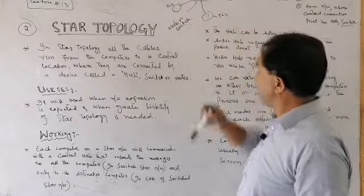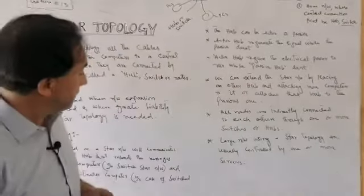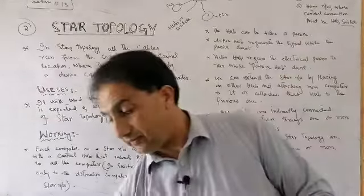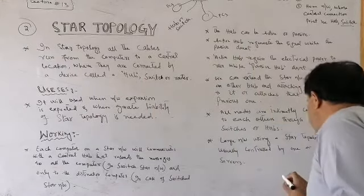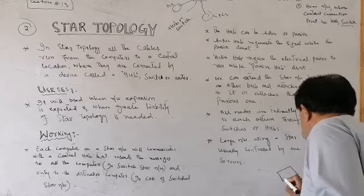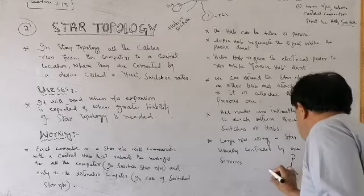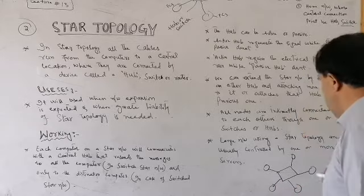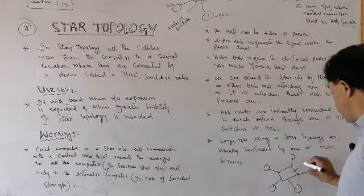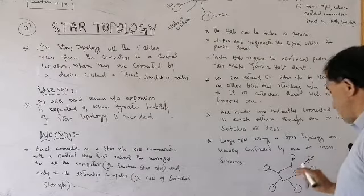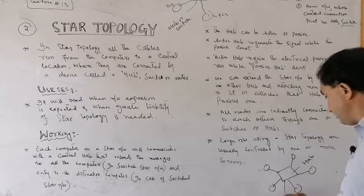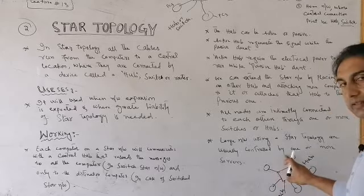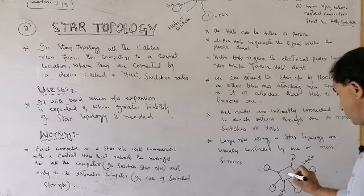In Star Topology, each node is connected to the other nodes through a central device called a hub. This central device may also be called a switch or a router. All these nodes or computers are connected to each other through this central device.